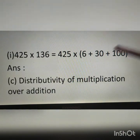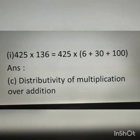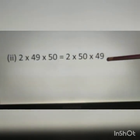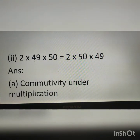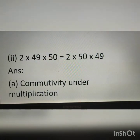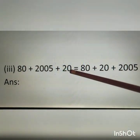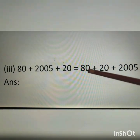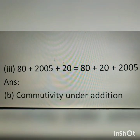Therefore the answer to the first question is distributivity of multiplication over addition. Second: 2 into 49 into 49 is equal to 2 into 50 into 49. Here the numbers are the same, only interchanged, so the answer is commutativity under multiplication. Third: 80 plus 2005 plus 20 is equal to 80 plus 20 plus 2005. The numbers are the same and interchanged with the operator plus, so the answer is commutativity under addition.